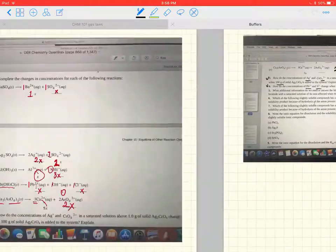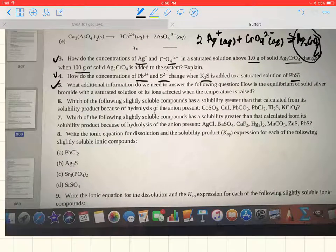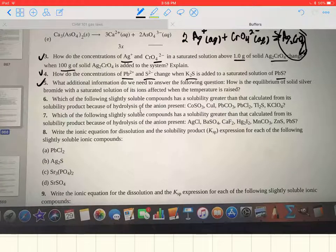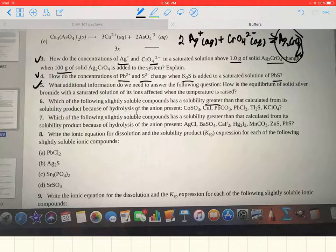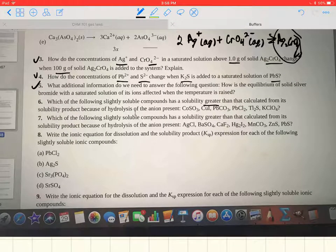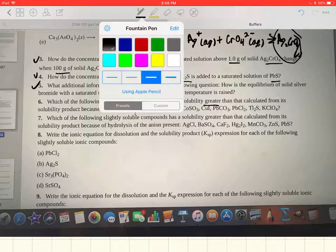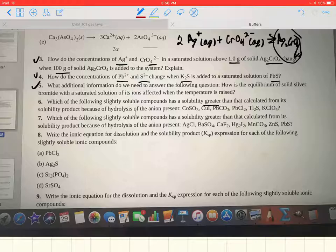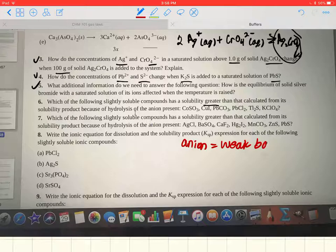Let's look at question six here. Which of the following slightly soluble compounds has a solubility greater than that calculated from its solubility product because of hydrolysis of the anions present? Now the next question is very similar, so I'll just go ahead and circle the answers and then discuss a couple of these. Anytime the anion is a weak base,